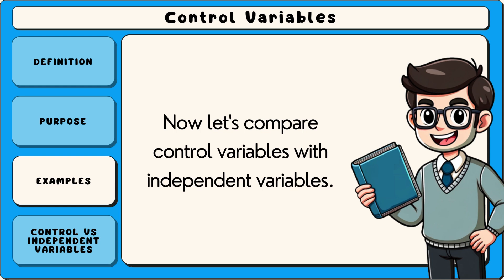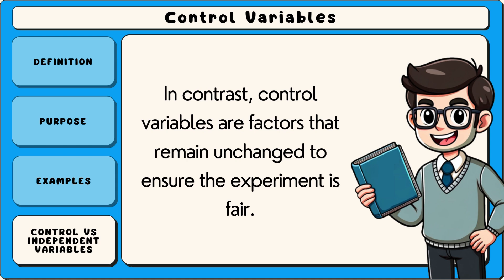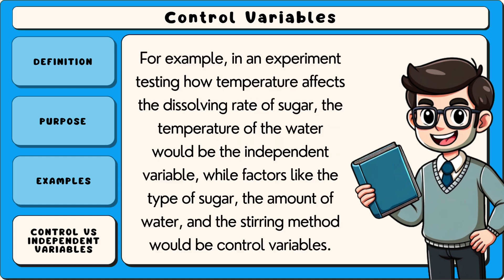Control variables and independent variables serve different roles in an experiment. The independent variable is what the researcher intentionally changes to observe its effect on the dependent variable. In contrast, control variables are factors that remain unchanged to ensure the experiment is fair.